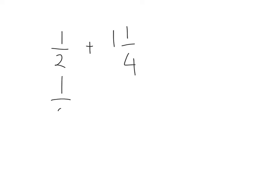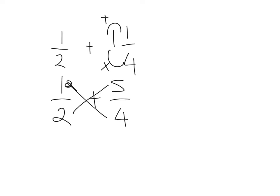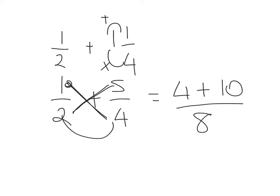We'll first of all change the mixed number into a fraction. So that's 4 times 1 is 4 plus 1 is 5, so 5 over 4. We can now do kiss and smile. We'll start at the top left hand side: 4 times 1 plus 5 times 2, over 2 times 4. So that's 4 plus 10 over 8, which is 14 over 8.